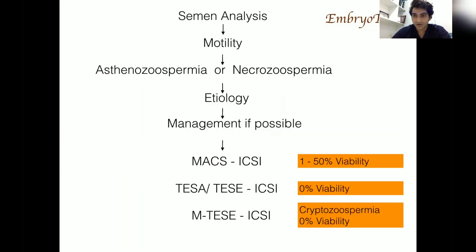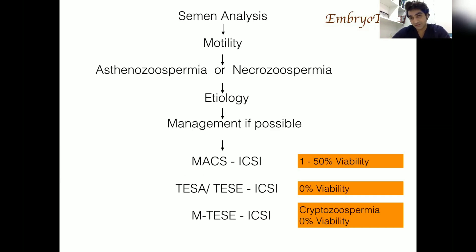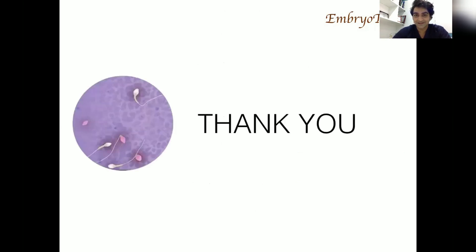In conclusion, we start with semen analysis and check for motility to rule out asthenozoospermia versus necrozoospermia. We look for the etiology and manage it if possible. In the lab, if there is some viability in the semen sample we look at MACS. If there is no viability at all, we look for TESA or TESA-ICSI. And if there is cryptozoospermia with necrozoospermia, we look for micro-TESE and ICSI. Thank you.